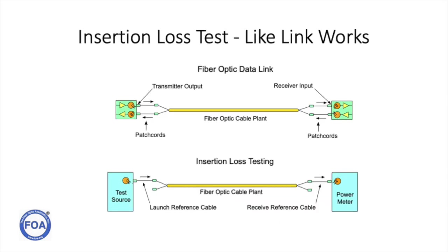The communications system will connect into the cable plant using patch cords, and our testing methods will mimic the way those patch cords are used. We are going to use special reference cables chosen specifically for the type of test we are going to perform, whether it be insertion loss or OTDR testing. Insertion loss testing tests the cable plant almost exactly the way an actual communications system works.